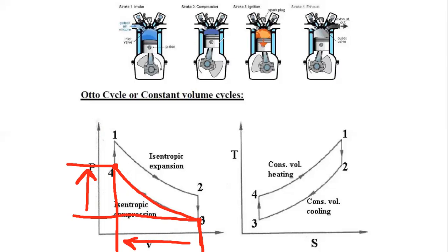Isentropic compression means that during the compression stroke both the inlet valve and the exhaust valve are closed. Because both valves are closed, there is no heat exchange — isentropic means no change of entropy, meaning no heat enters from outside and no heat leaves from inside.